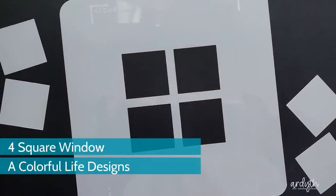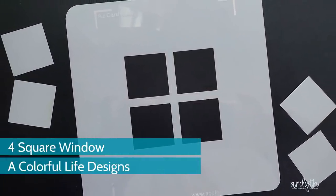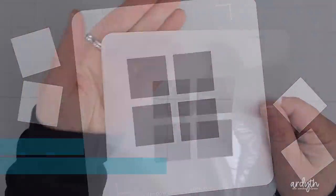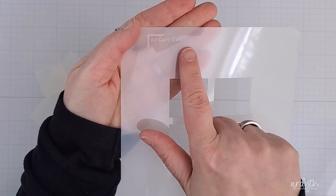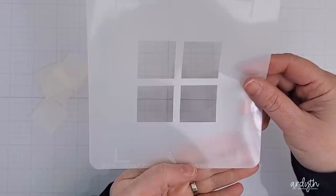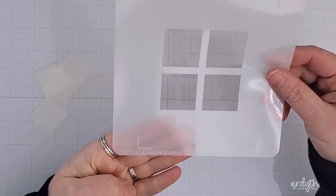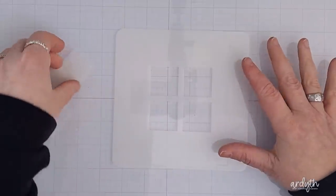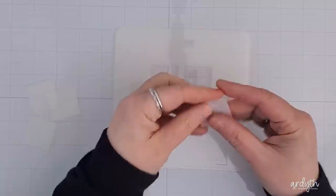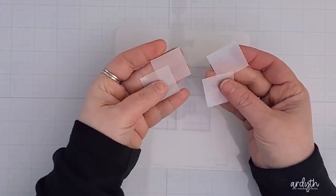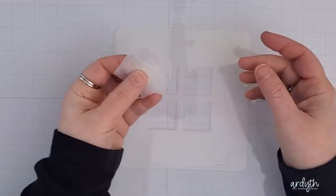This is the four square window stencil from A Colorful Life Designs. As you can see, there are four perfectly spaced squares in the center and there are guidelines etched into the stencil itself to show you how to place your A2 size panel so the squares are perfectly centered. You also get the four squares that were cut from the stencil and you can use these as masks in your card designs.